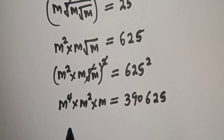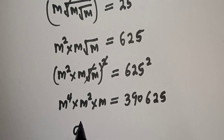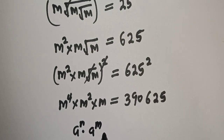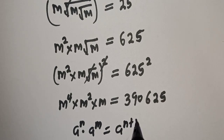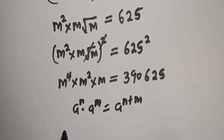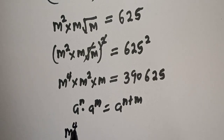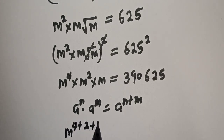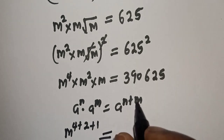Now take note of this rule: if you have a raised to power n multiplied by a raised to power m, this is equal to a raised to power n plus m. Using this rule, the left-hand side becomes m raised to power 4 plus 2 plus 1, which is m raised to power 7.